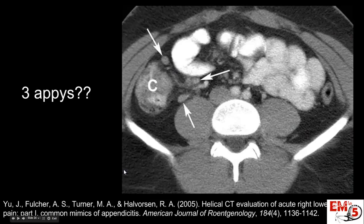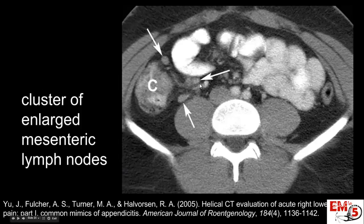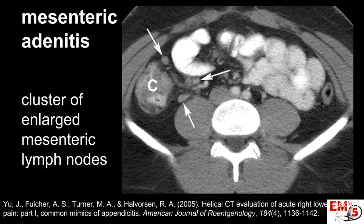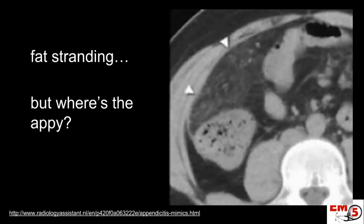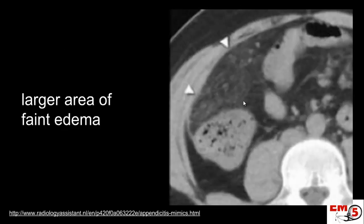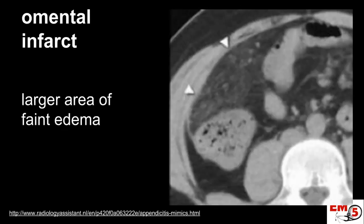Next up: we're looking through a scan with right lower quadrant pain — is this a cluster of epiploic appendages? It's actually a cluster of enlarged mesenteric lymph nodes, and your radiologist will call this mesenteric adenitis. What about this next one? We have a lot of fat stranding but don't really see anything else. This is basically a large area of fat edema, and your read may come back as a mesenteric infarct.